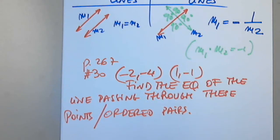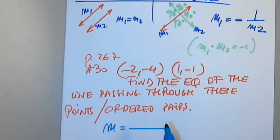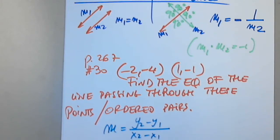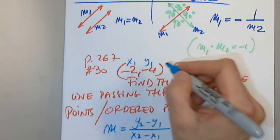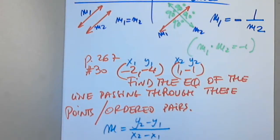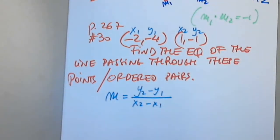What do I have to find first? The slope. When I find the slope, I will always write the equation y2 minus y1 over x2 minus x1. I will label my points x1, y1, x2, y2, and then carefully plug them in.